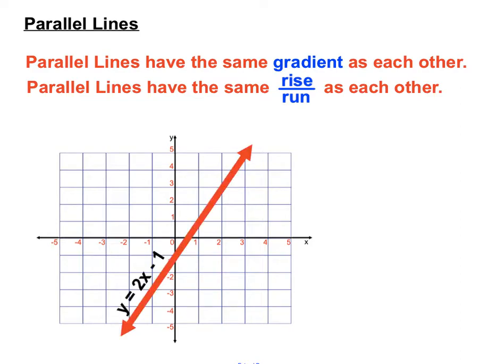Here's a line: y equals 2x minus 1. Now the gradient of that, the slope of that, we'll have a look at the rise and the run. It rises 2 and runs 1. 2 over 1, a rise of 2 and a run of 1.